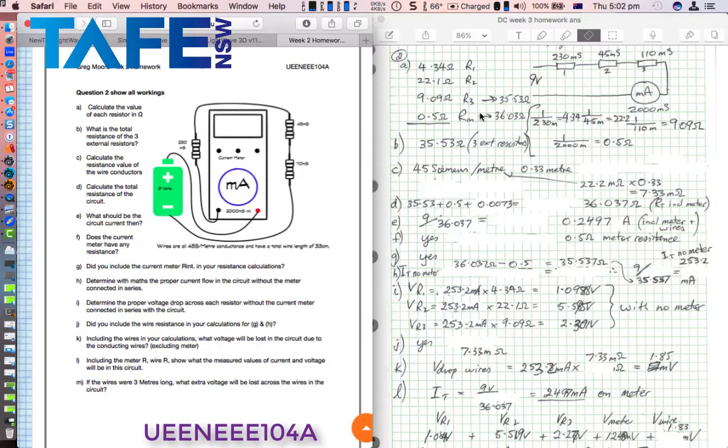On the solution page I've taken the 230 millisiemens of the first resistance and taken the reciprocal, coming out with 4.34 ohms.